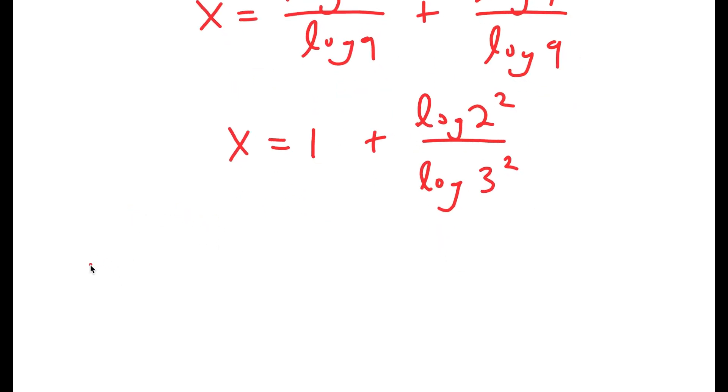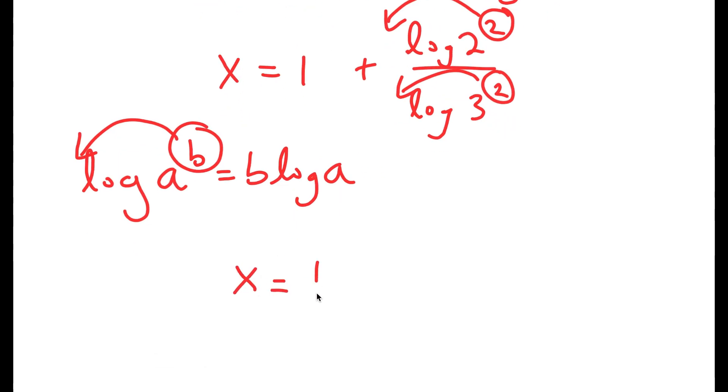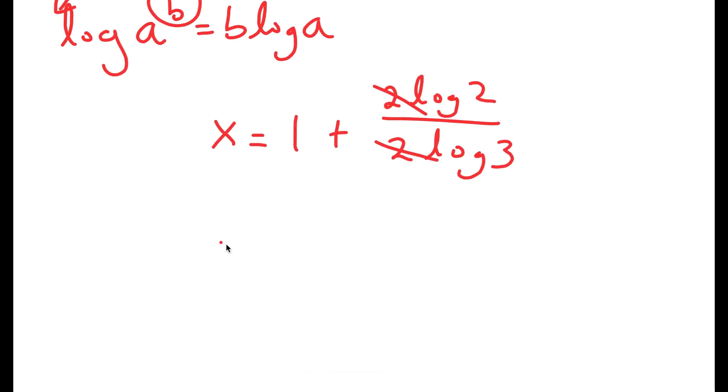And if I have something in the form log of a to the power of b, I can move this exponent of b to the front, so this turns into b times log a. In this case, I can move 2 to the front over here, 2 to the front over here. So I get x is equal to 1 plus 2 times log 2 over 2 times log 3. From here, I can cancel out these two 2s. So I get x equals 1 plus log 2 over log 3.